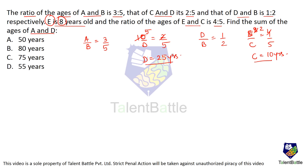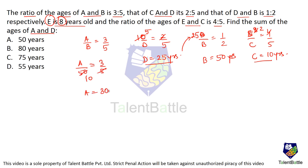Now we need to find the age of A. Age of D is 25, and D/B = 1/2, so age of B is 25 × 2 = 50 years. Substituting into A/B = 3/5: A/50 = 3/5, so age of A comes out to be 30 years. Therefore A + D = 30 + 25 = 55 years. The answer is option D.